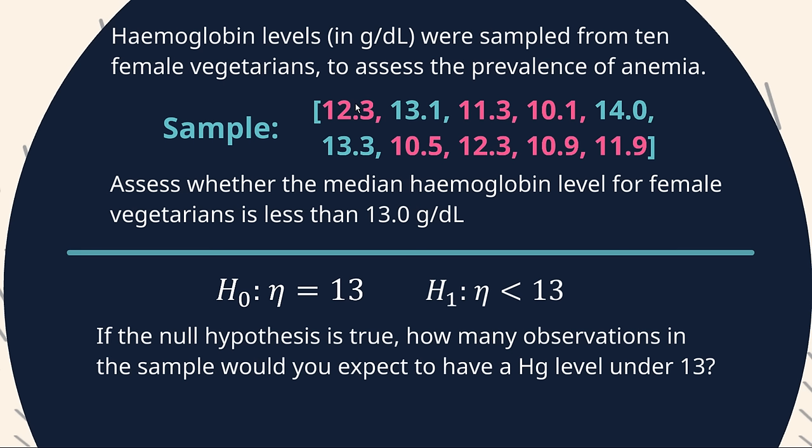What did we get? Well, I've highlighted the observations that are less than 13 here, and they're all in pink. So we get seven observations that are less than 13. So technically, that means we have a sample which is more extreme than we would expect if this null hypothesis is true. But how extreme is this sample? Is the fact that we had seven below 13 grams per deciliter enough information for us to reject this null hypothesis? Well, that depends, and that depends on a particular distribution. So let's have a look.